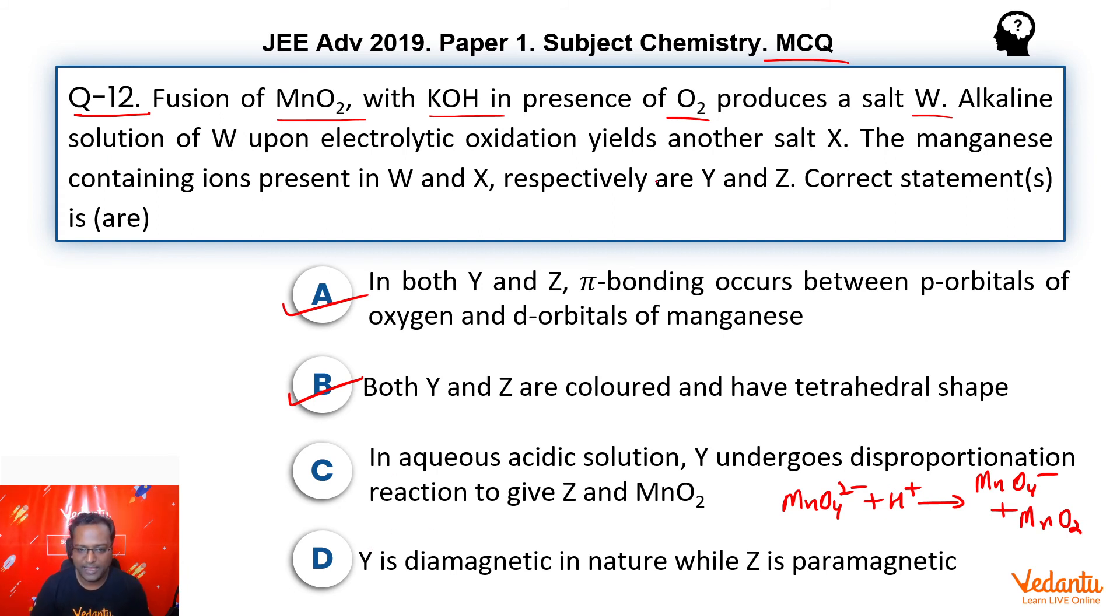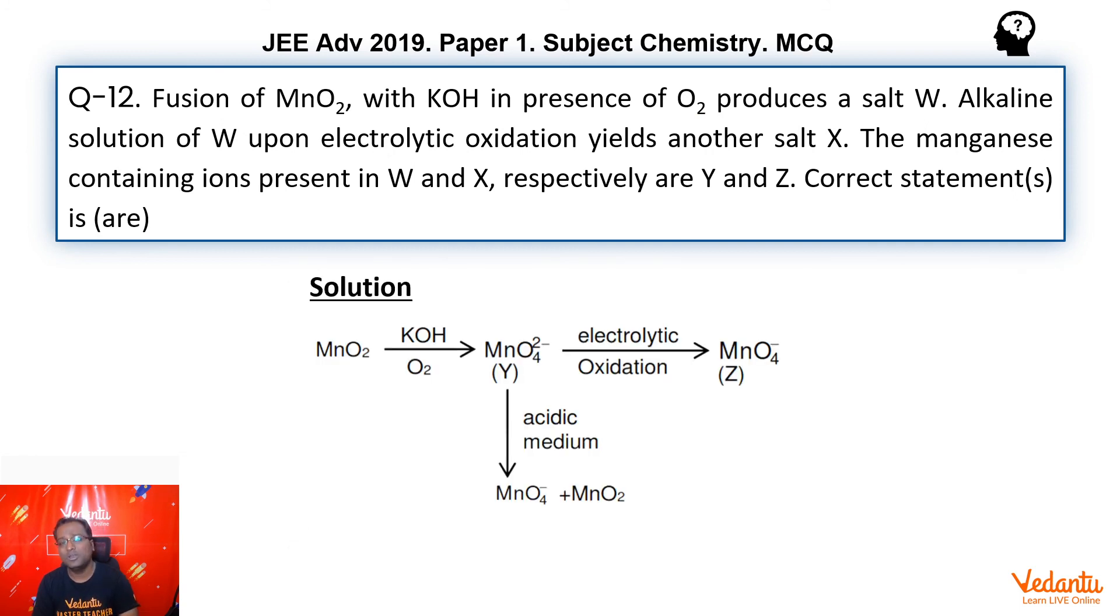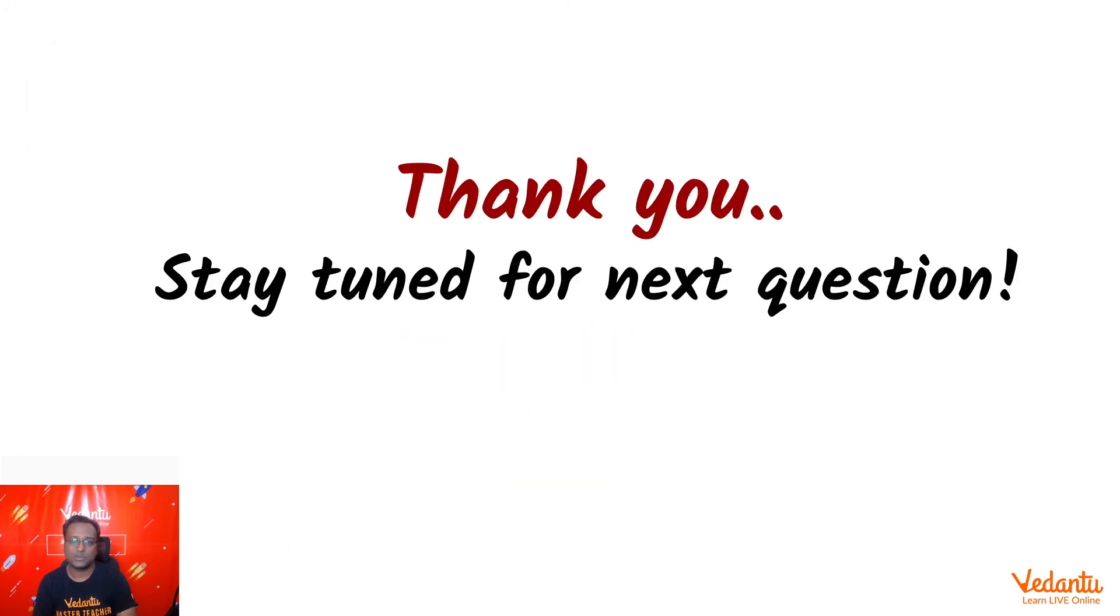Now he says Y, that is MnO4 2 minus, that is plus 6 oxidation state, that's d1 configuration, is diamagnetic. So this becomes incorrect. Hence the answer here is A, B, and C. We also have the reaction given here for you, and stay tuned for our next question.